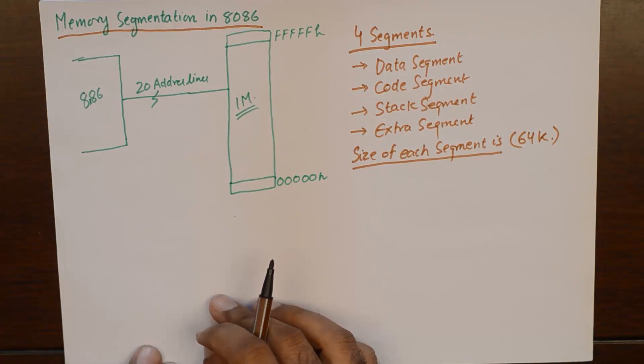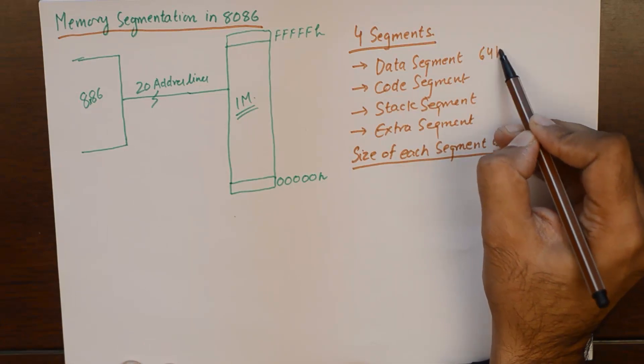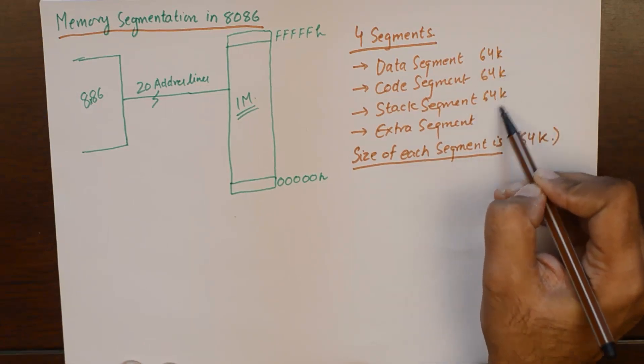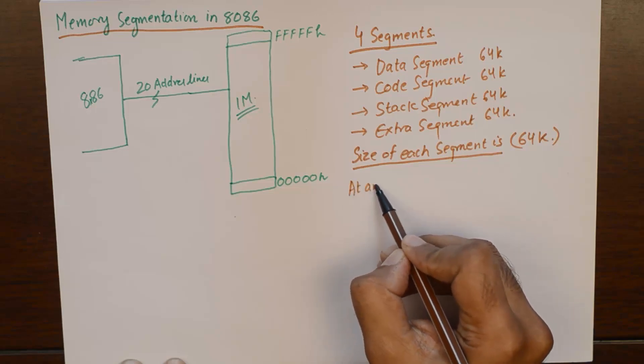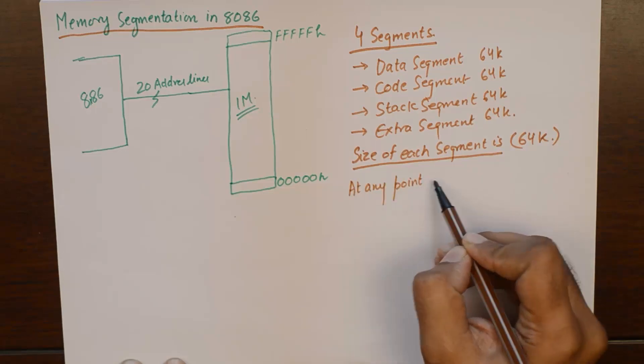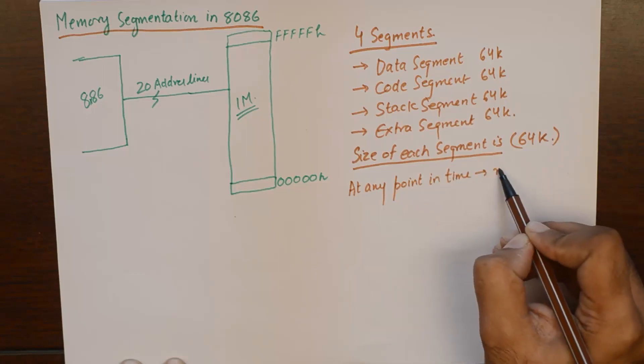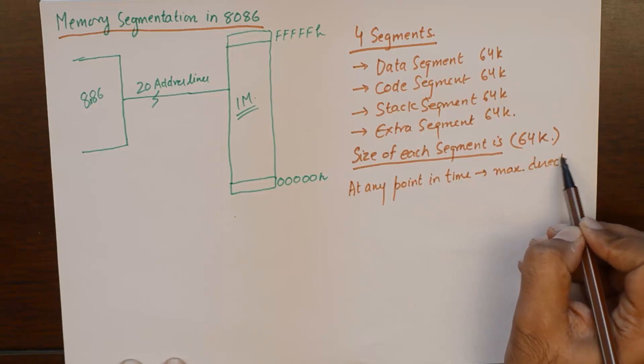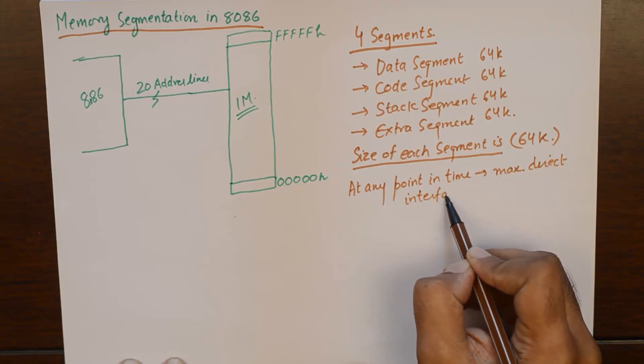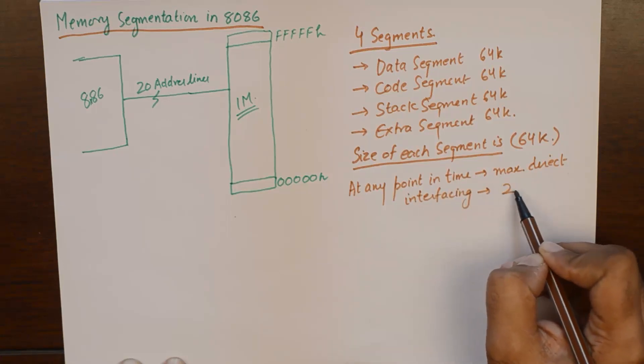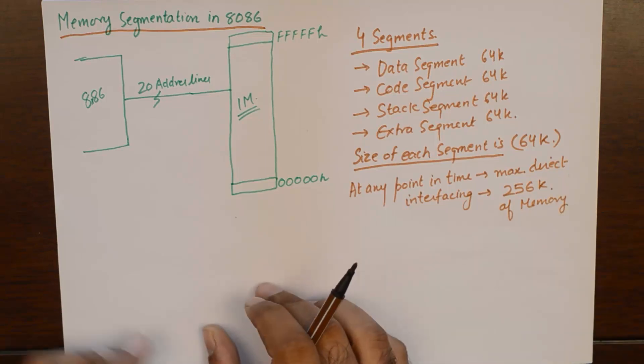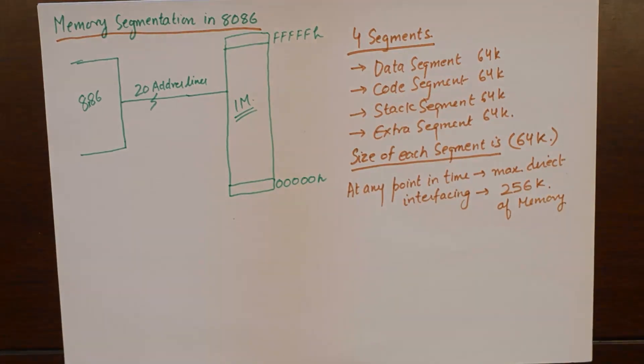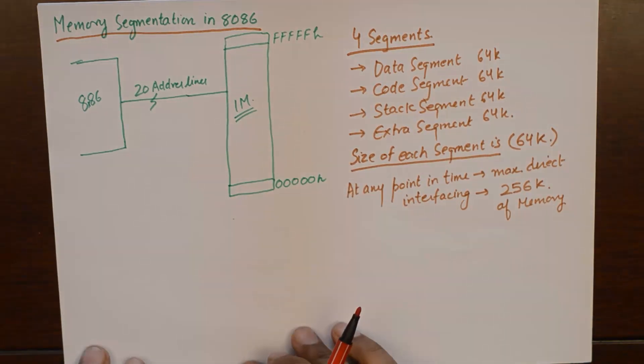If we assign 64K to each of these segments, we can say that at any point in time max direct interfacing is happening with 256K of memory. Now how do we actually show this? Let me redraw this memory in context with these segments.